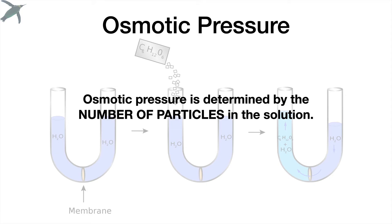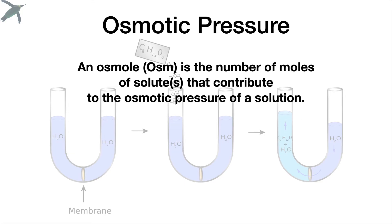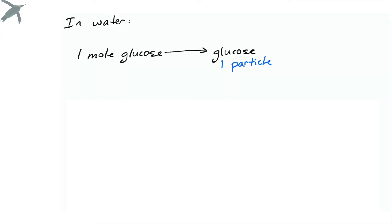The osmotic pressure we see in this tube is determined by the number of particles in solution. The more particles you have, the higher the osmotic pressure will be. Size of the particles doesn't matter, and neither does shape or charge. The osmol is the unit that we use — it's the number of moles of solute that contribute to the osmotic pressure of a solution. Pay attention to this.